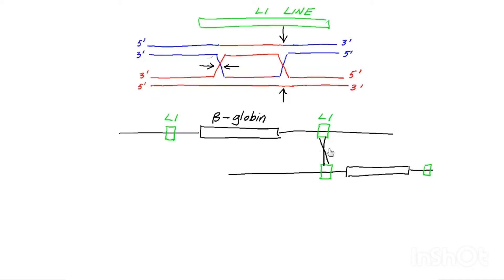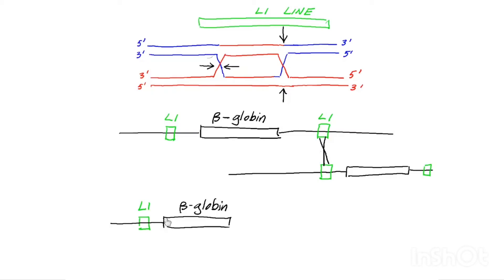As a result of that crossover, you now have a resolution into two different chromosomes. One chromosome will have two beta globin genes. So the upper chromosome here will have one beta globin gene, along with its LINE element L1. And then you come over here to this downstream LINE element — you have homologous recombination with a crossover. And so you would end up with a second beta globin gene and its downstream LINE element.